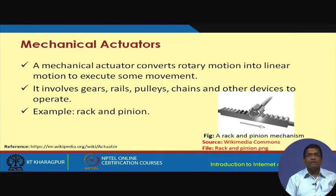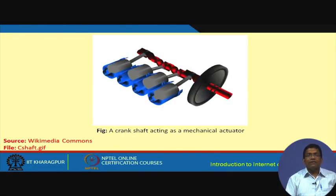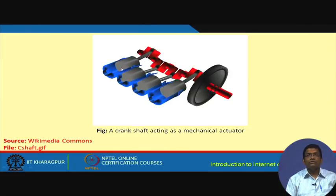Mechanical actuators convert rotatory motion into linear motion to execute movements. They involve gears, pinions, rails, pulleys, chains, and other devices. A rack and pinion is an example of a mechanical actuator — as one part moves, the other moves accordingly. A crankshaft is another example of a mechanical actuator — as the crank moves, it gives the connected part a mechanical rotatory motion.